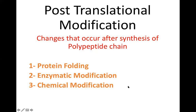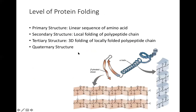After enzymatic modifications, there are chemical modifications. Chemical modification means the addition of small groups such as hydroxyl groups, phosphate groups, or acetyl groups. Each chemical modification has its own purpose and agenda. Chemical modifications can increase the half-life of the protein, activate protein activity, enhance it, or completely reduce the activity.